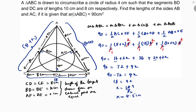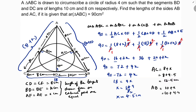Now we can find the side lengths. AC equals 8 plus X equals 8 plus 4.5, which is 12.5 centimeters. Similarly, AB equals 10 plus X equals 10 plus 4.5, which is 14.5 centimeters.